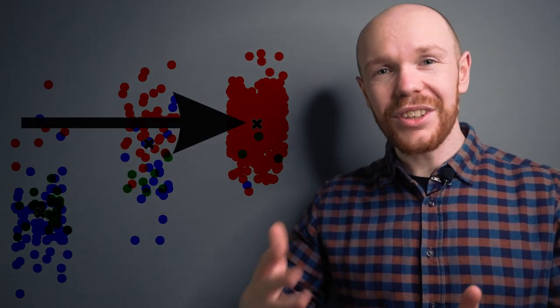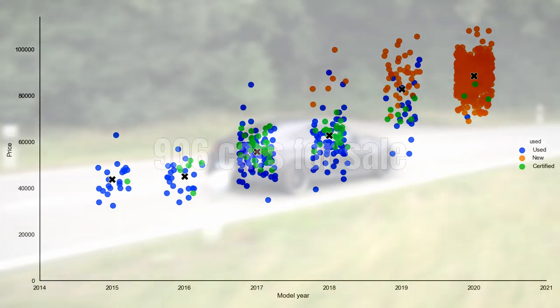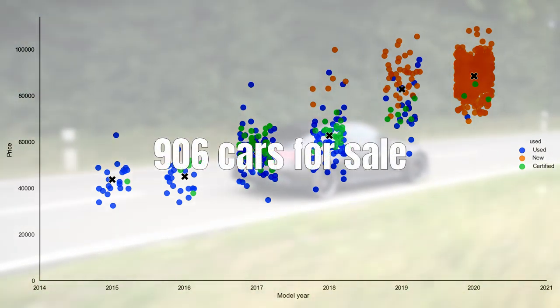Then you can also see that there are some small X's in the graph and these represent the average price point for a given model year. Now if we have a look at the market we can see that there are 960 C63 AMG's for sale.